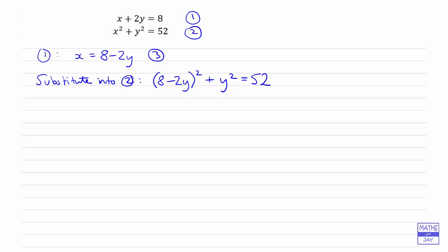Now we've just got an equation in y. We need to multiply out the 8 minus 2y squared. That's the same as 8 minus 2y multiplied by itself. Everything else stays exactly as it was in the previous line. We've just written 8 minus 2y times 8 minus 2y instead of 8 minus 2y squared.